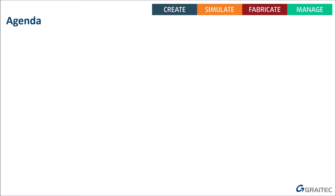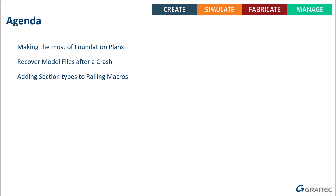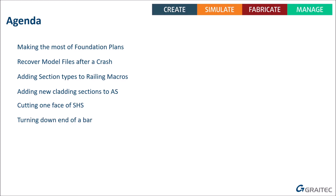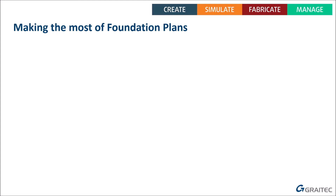Today's webinar covers general tips and tricks across a number of different topics: making the most of your foundation plans, including some hidden features; what to do if your file or machine crashes mid-workflow and how to recover without losing work; adding a different section type such as half-round square-edge bar to railing joints or macros; adding new cladding sections; and some modelling tips for cutting through just one side of an SHS or making a reduced diameter on the end of a bar.